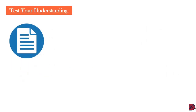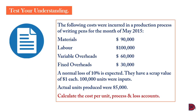Let's test our understanding. The following costs were incurred in the production process of writing pens for May 2015: materials $90,000, labor $100,000, variable overhead $60,000, fixed overhead $30,000. A normal loss of 10% was expected, with a scrap value of $1 each. 100,000 units were inputted. The actual units produced were 85,000. We need to calculate the cost per unit, the process account, and the loss account.